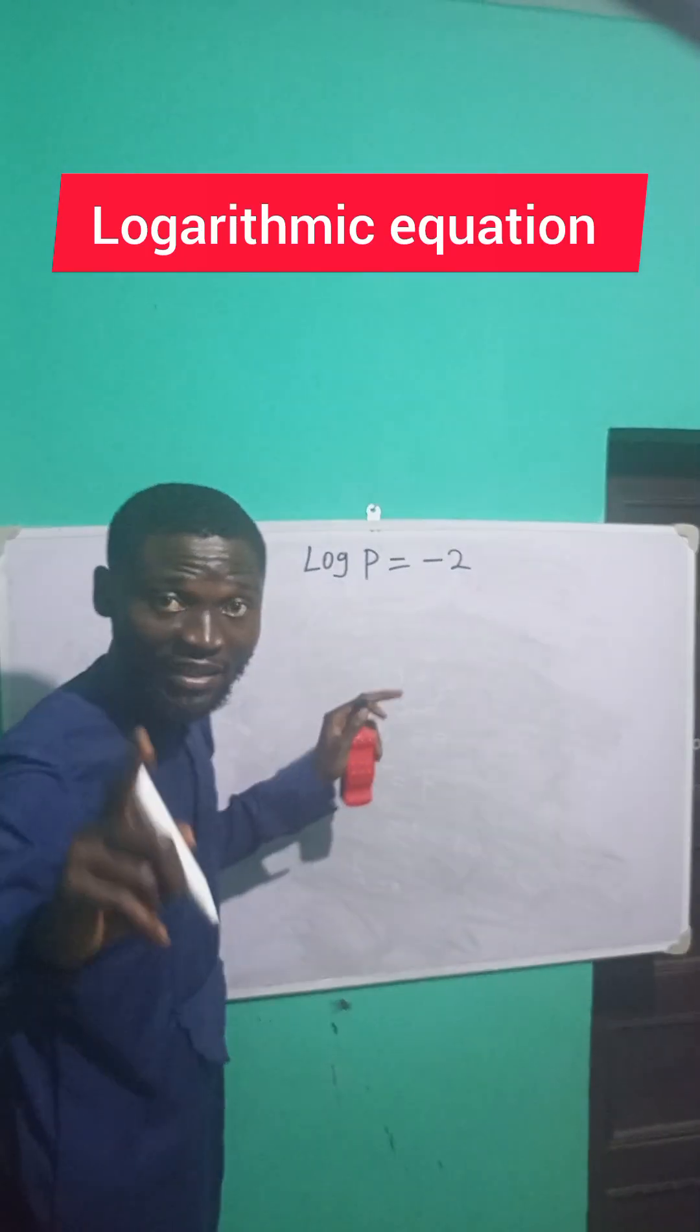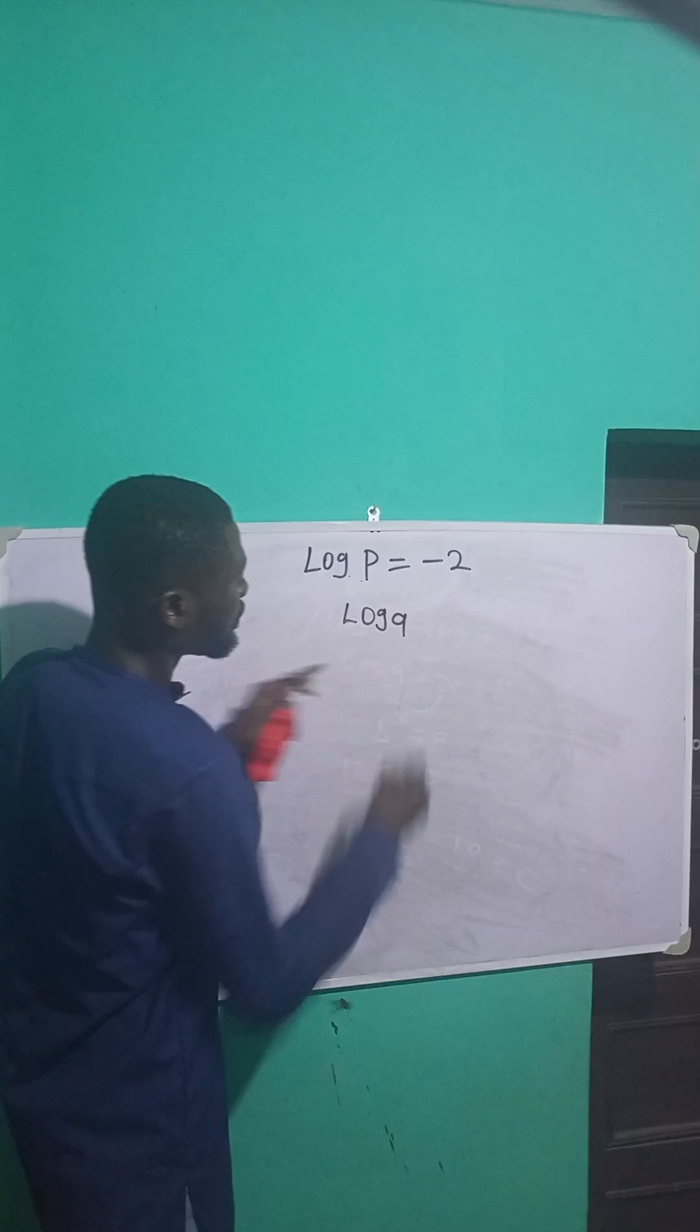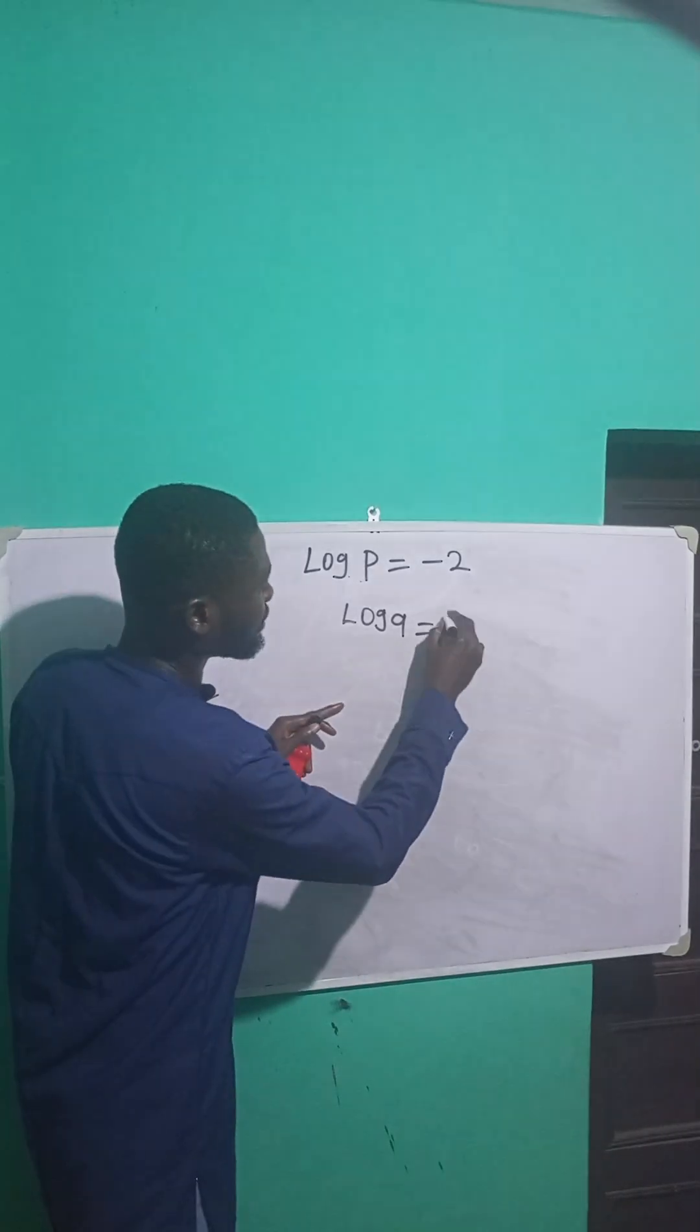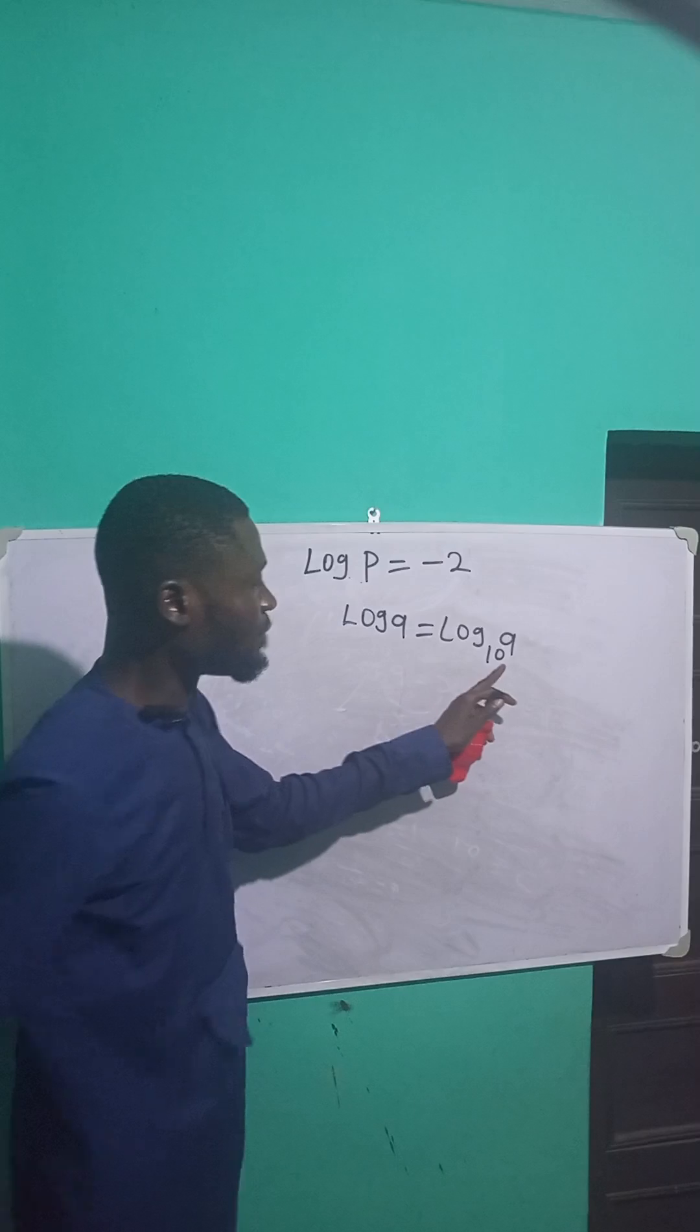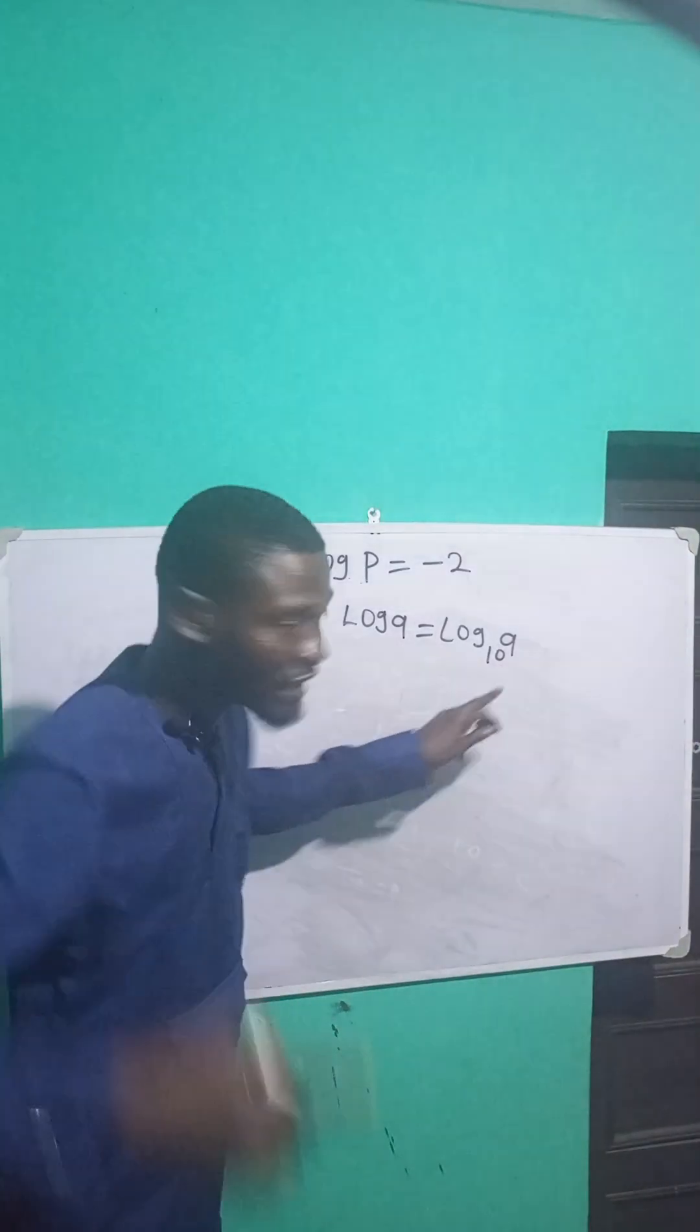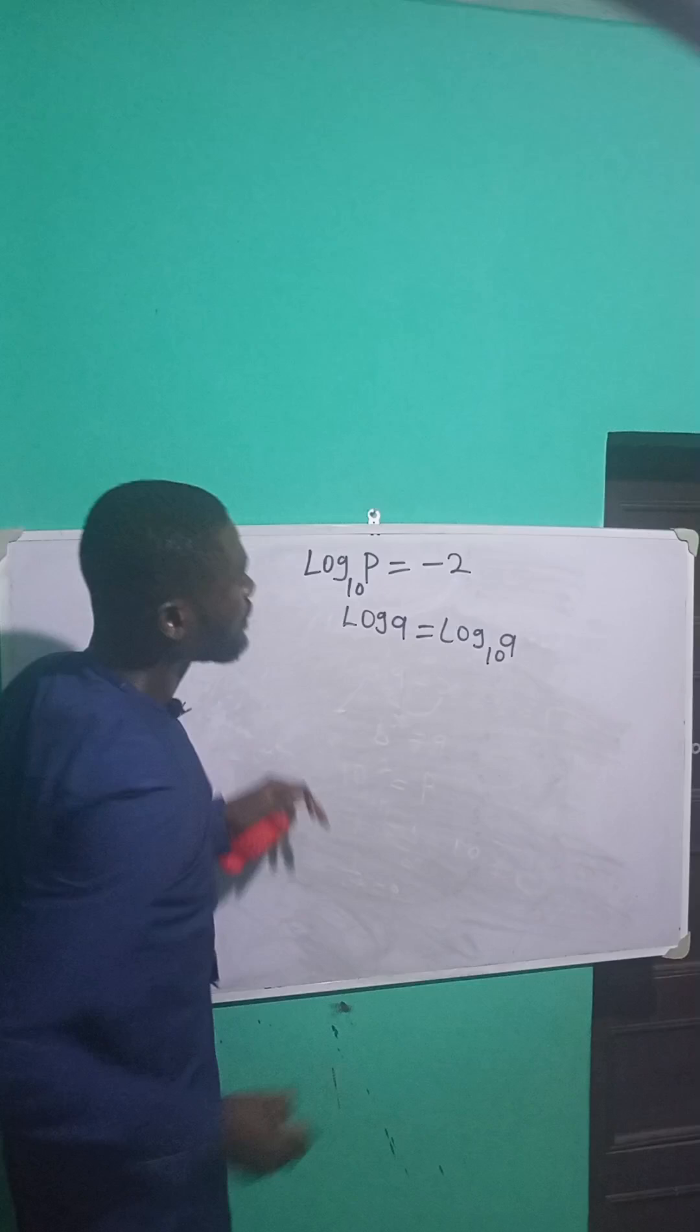So, to solve this, remember that for every log A, every log A can be written as log A to a base of 10. So by default, it has a base of 10. That means that by default, this will have a base of 10.